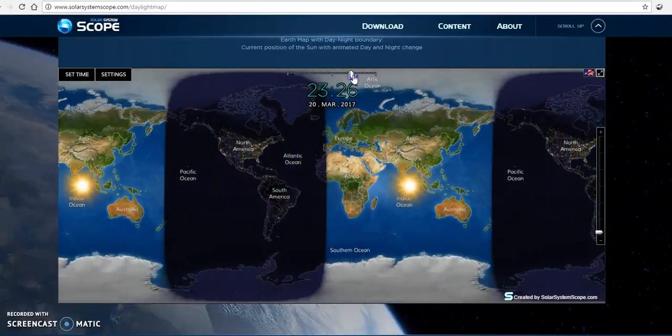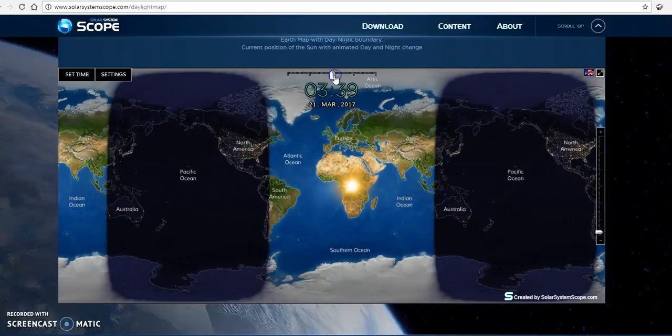We're getting close to March 21st. This is so cool. Let's go ahead and stop that there. Now look at the subsolar point—the subsolar point is right here along the equator, and it really does solidify the fact that both hemispheres are receiving equal night and equal day.